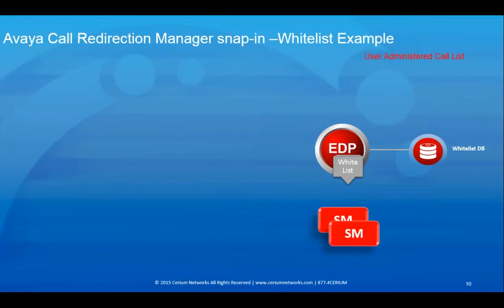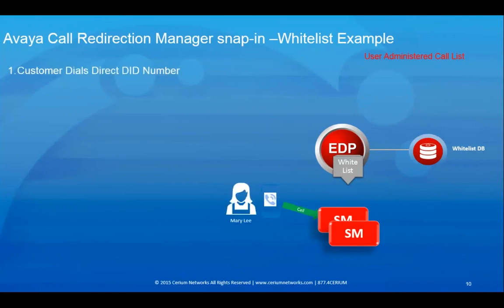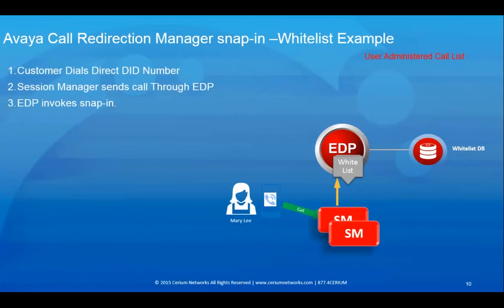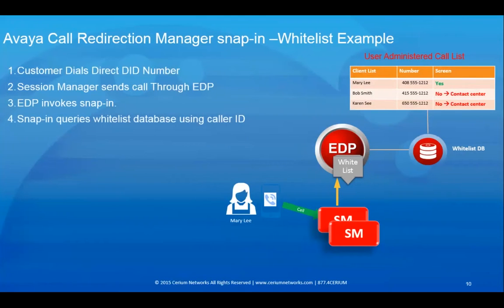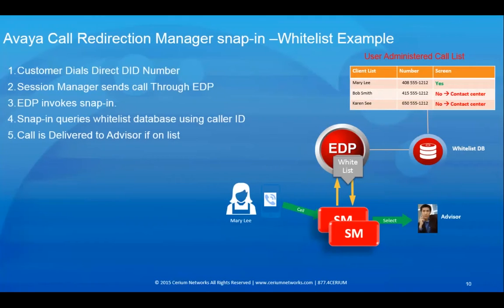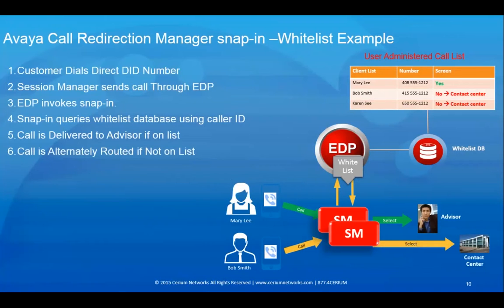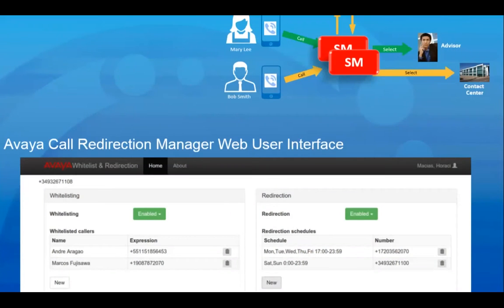Call Redirection Manager is an Avaya snap-in which allows you to manipulate where a call lands based on information contained in a database that can be dynamically changed by administrators or staff. In this example, a customer dials a direct ID number, session manager sends the call through EDP, the snap-in queries a whitelist database using caller ID, the call is delivered to the advisor if on the list, or alternately routed to the contact center if not.